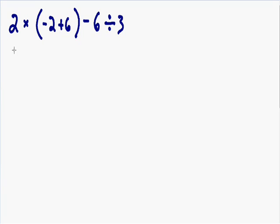In this example we have 2 multiplied by negative 2 plus 6 in parentheses, minus 6 divided by 3. If we use our order of operations correctly, there is only one possible answer that we can get for this expression.